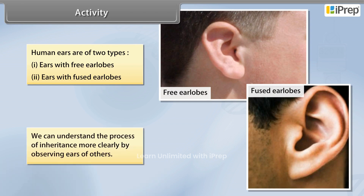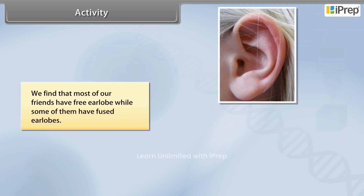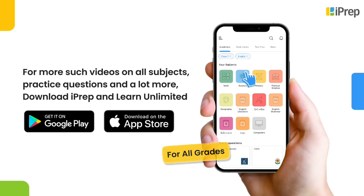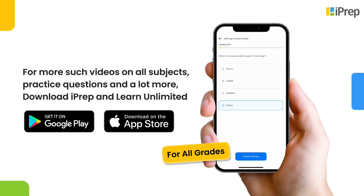We can understand the process of inheritance more clearly by observing the ears of all the students in the classroom. We find that most of our friends have free ear lobes, while some of them have fused ear lobes.